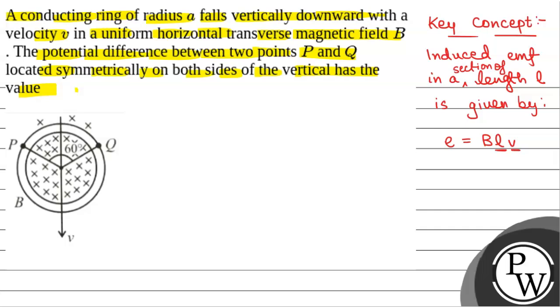Velocity with which it is falling and B is the magnetic field, and E is the induced EMF. Now, we can take this curved path PQ as a straight path.